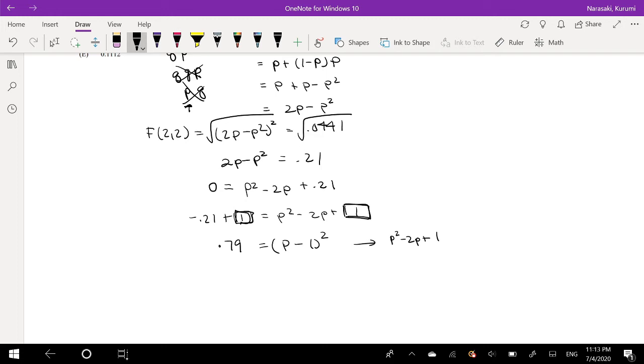Okay, so we take the square root. So this becomes positive or negative 0.79. So what's the square root of 0.79? Well, that equals plus or minus 0.8881 equals P minus 1. So I'm going to have to add 1 to each side.